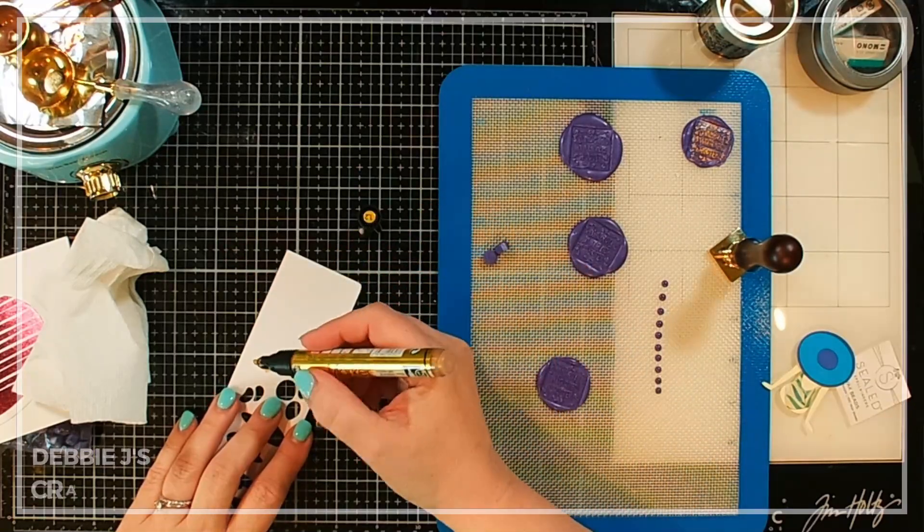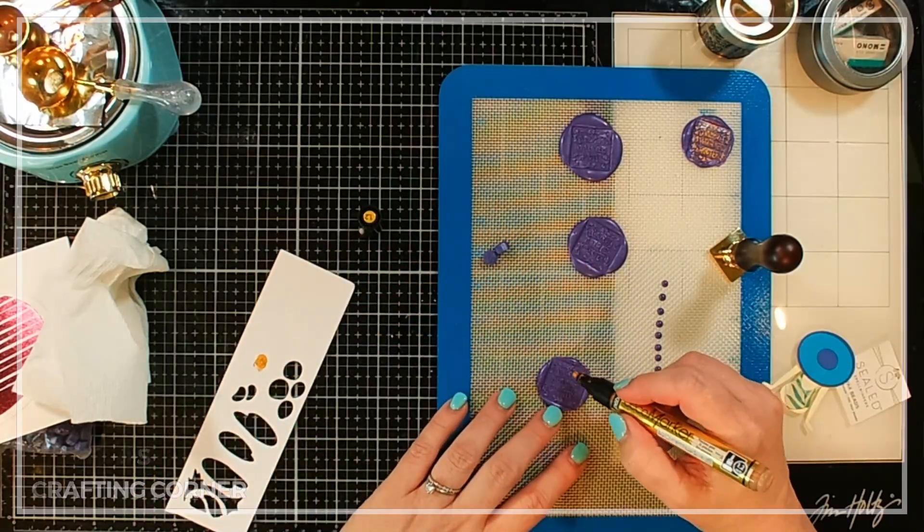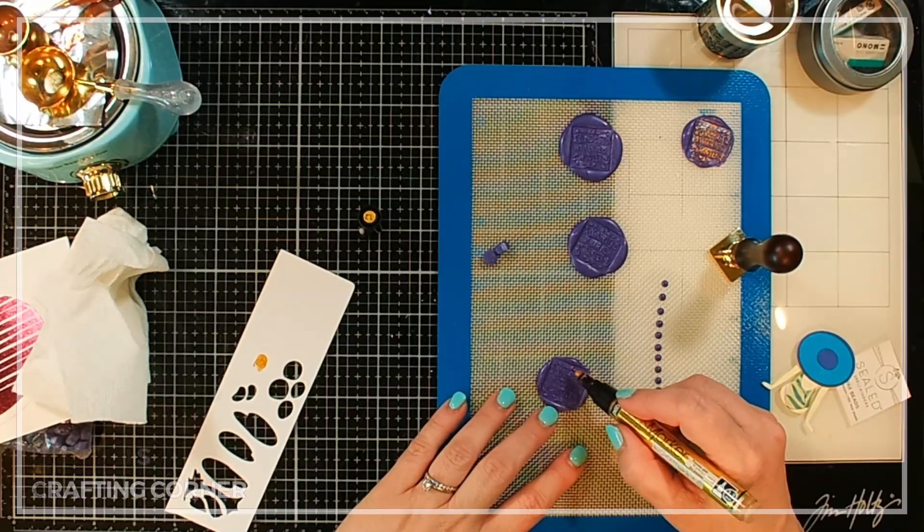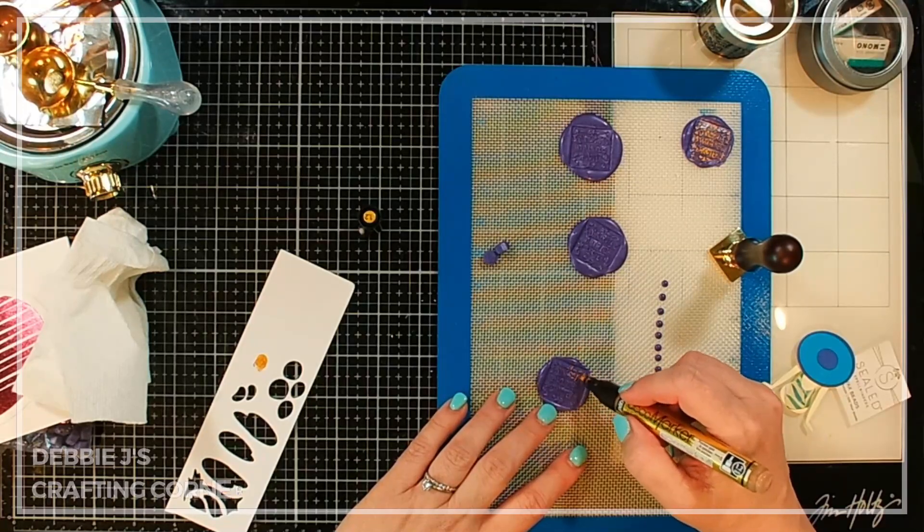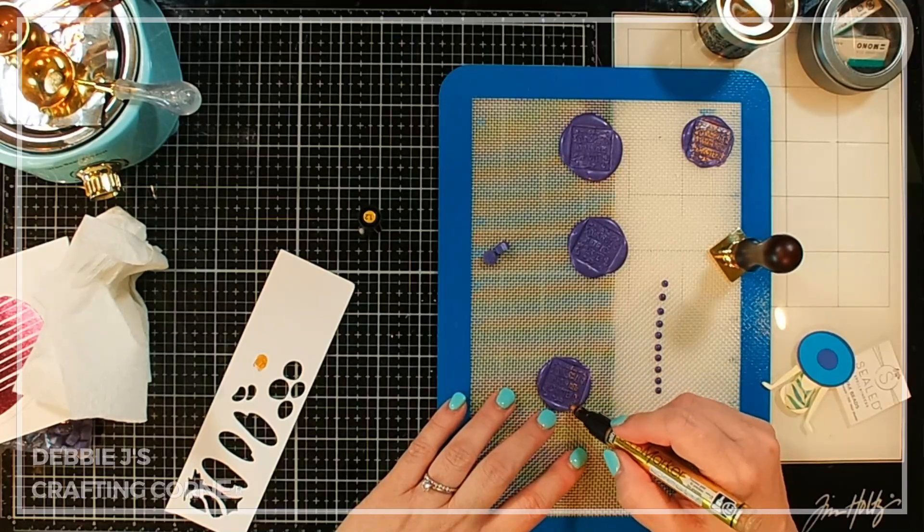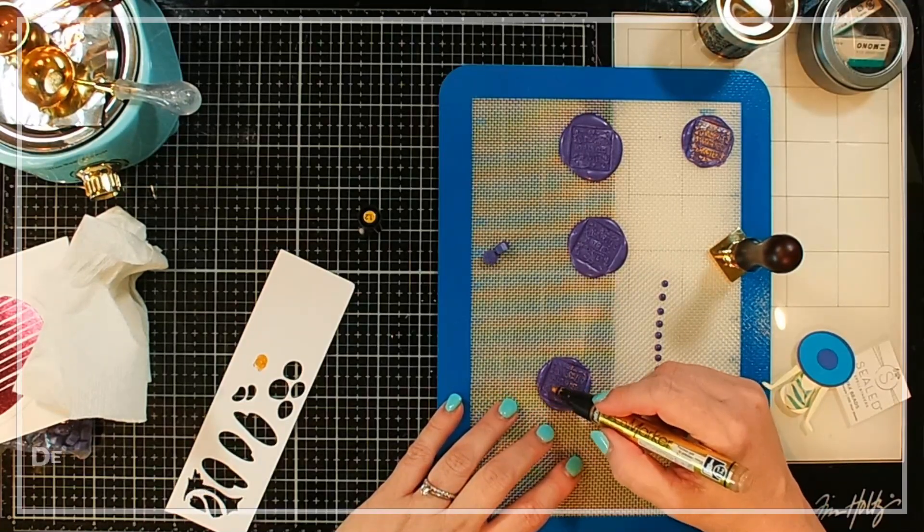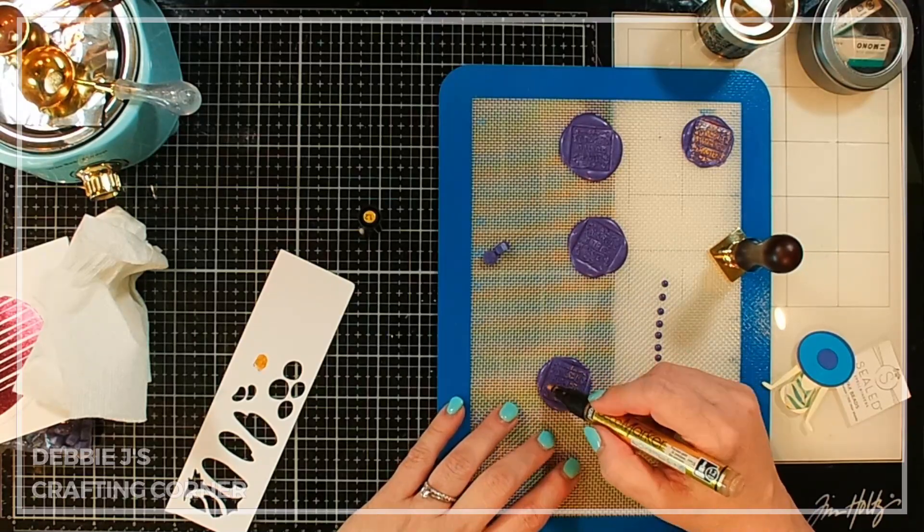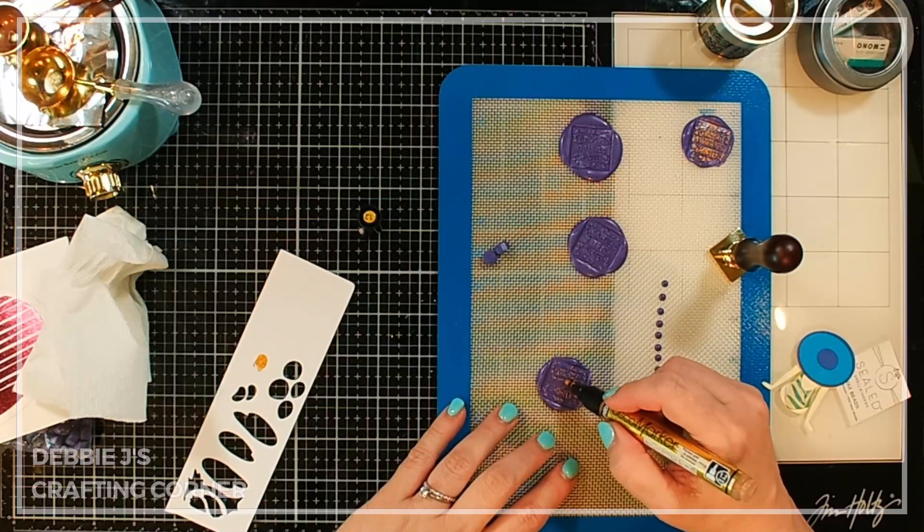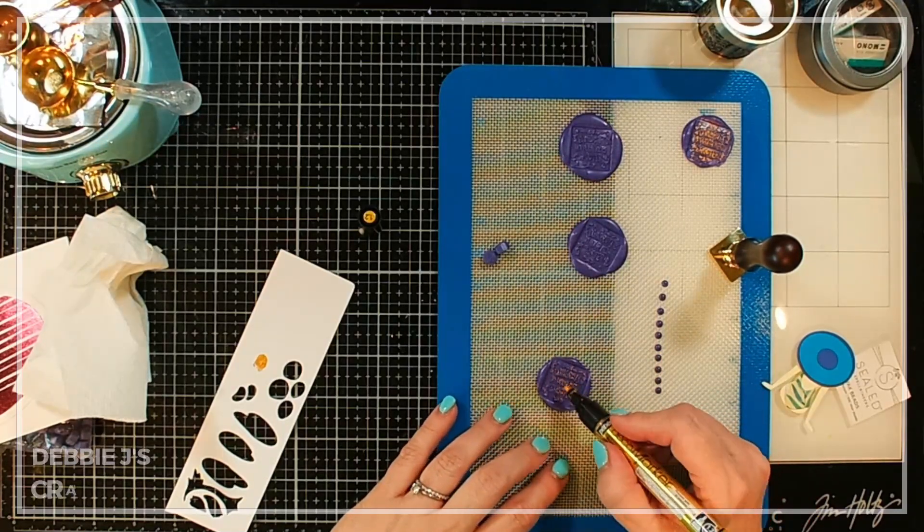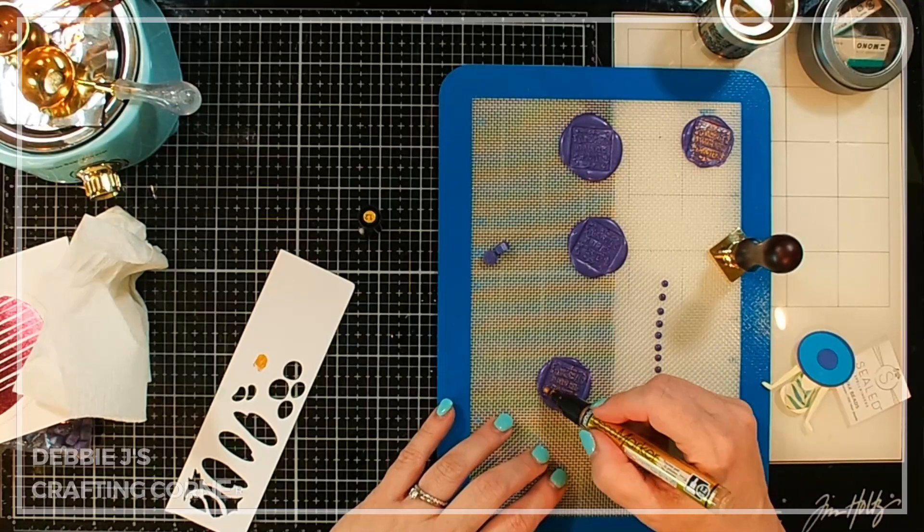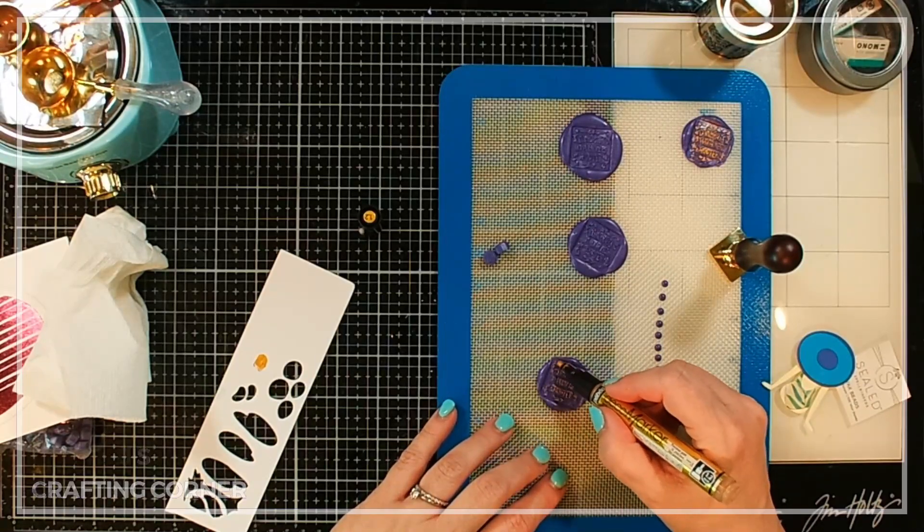I'm going to be gentle and try just to get the tops of each of those raised characters and vines. Just get the top layer. Kind of like what you would do when you're using an embossing folder. So that hopefully we'll be able to read this better but not have it go down onto the rest of the wax.